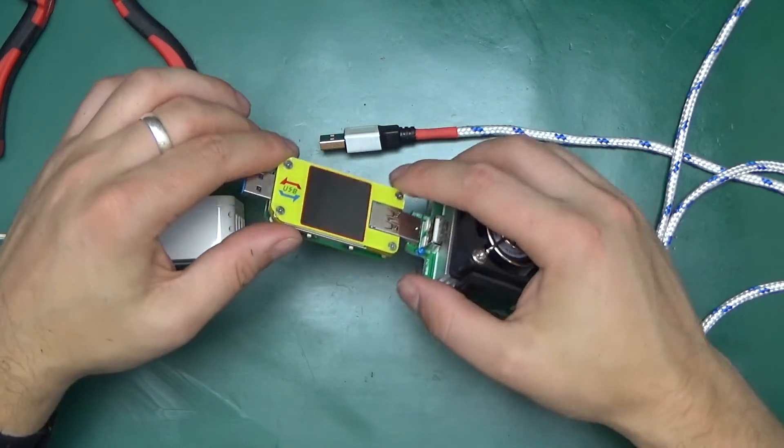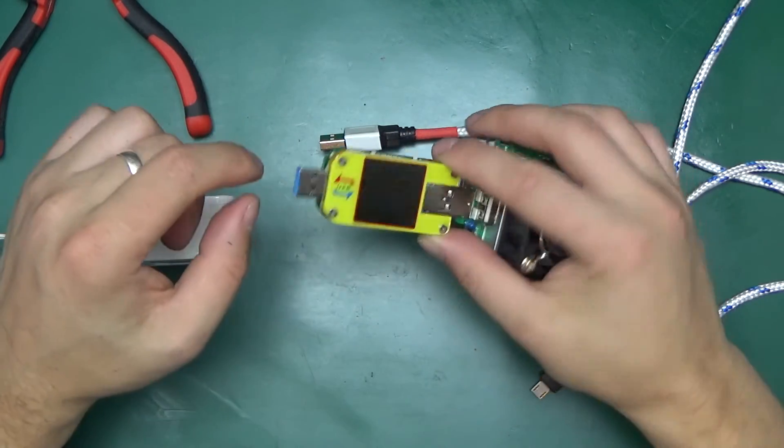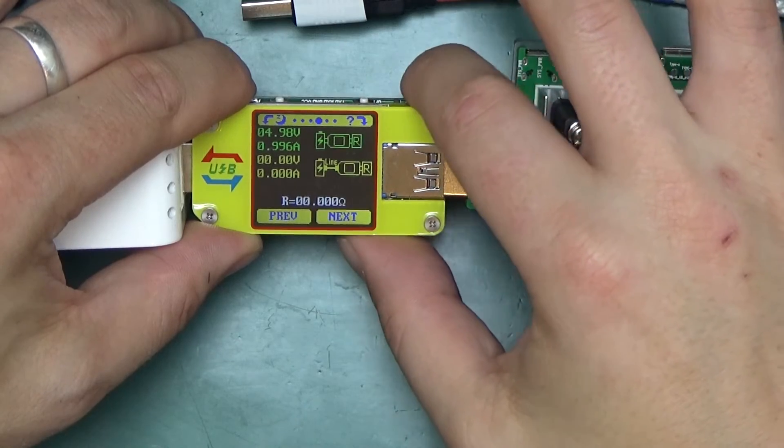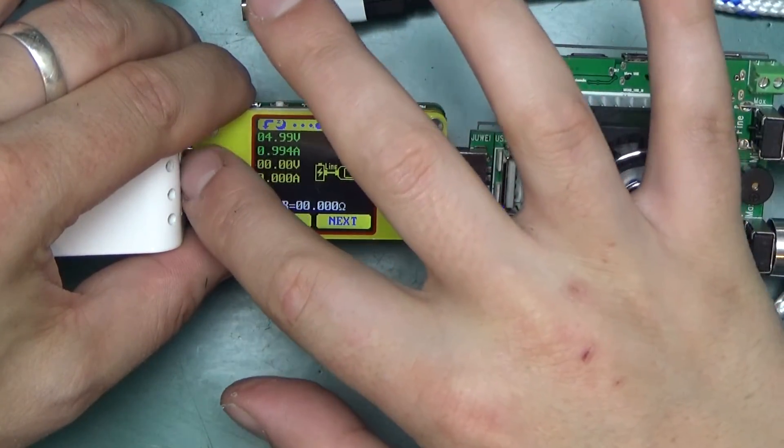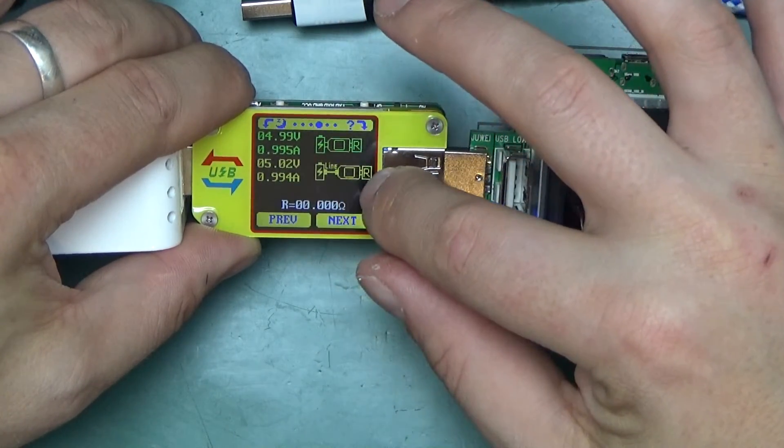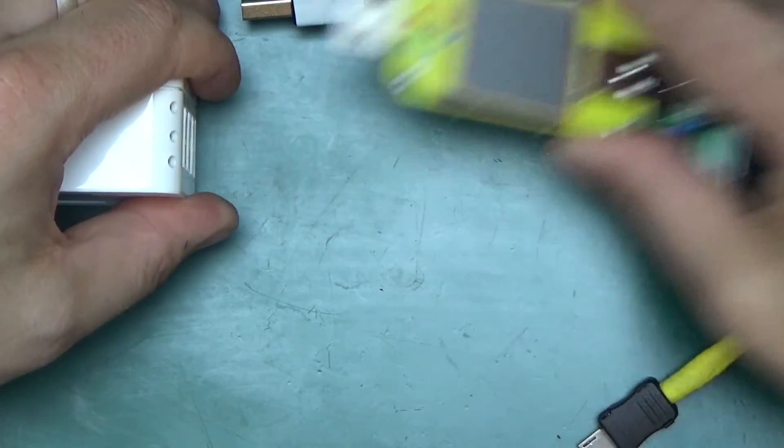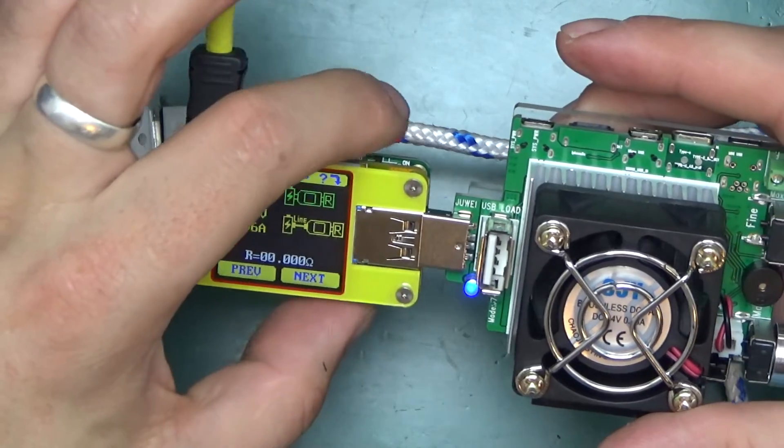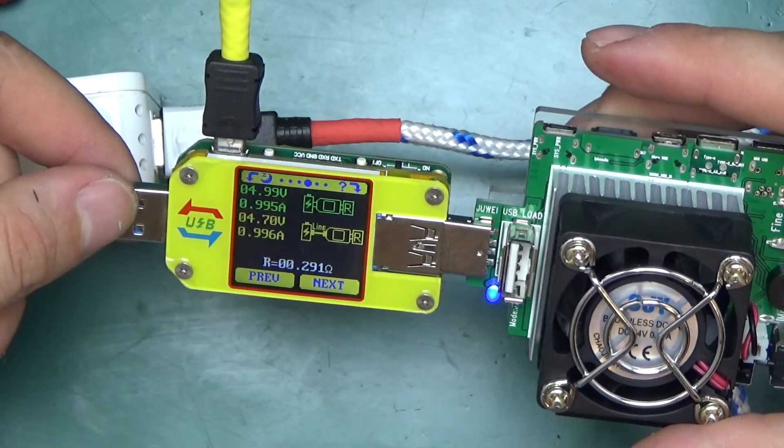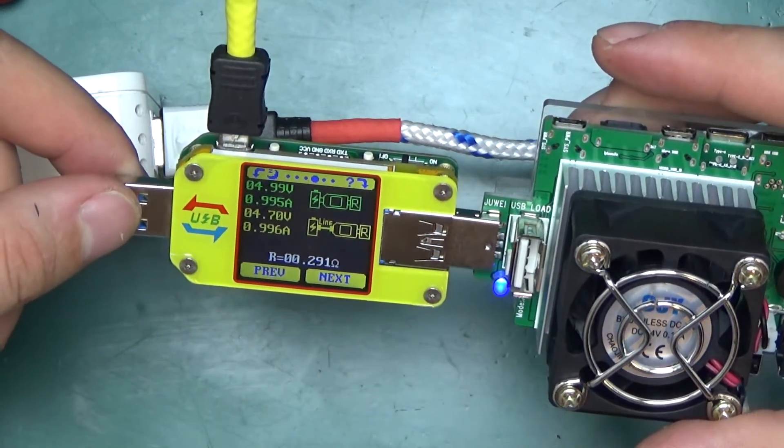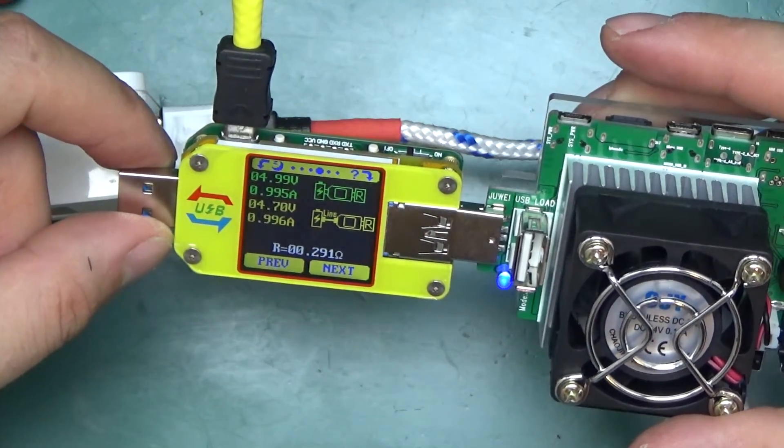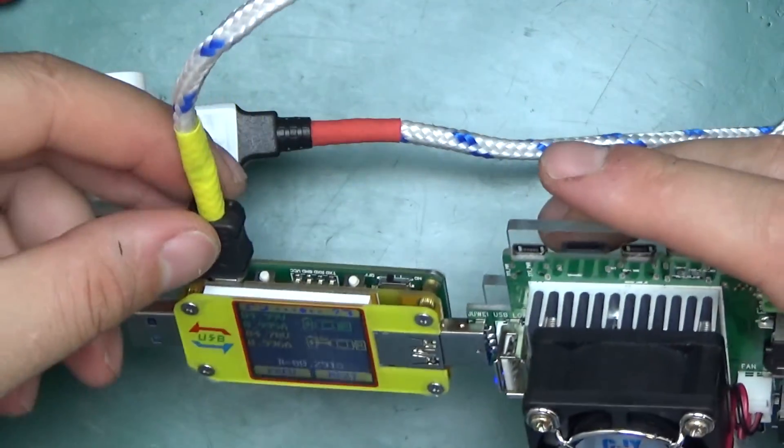Let's do one more test using the UM34C because this has got a function of measuring the resistance of a USB cable. Drawing one amp for the purpose of this test. We press and hold this button. That will take the direct measurement from the USB port directly from the voltage source. Now it's gone to a second one where we can plug in a cable. So let's do that. And again, the same current and let's press and hold the button. And there we go. Our cable resistance is 0.291 ohms according to the calculation. It dropped 0.2 of a volt. That's quite reasonable for a cable of this length.